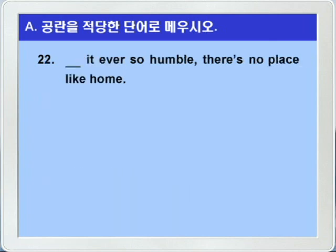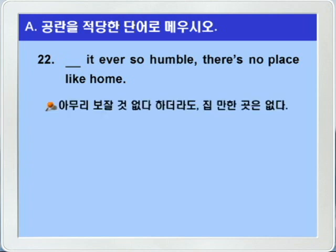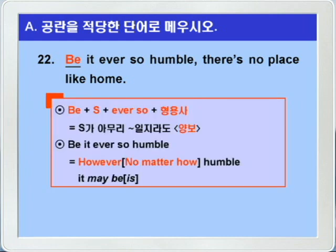22번입니다. blank, it ever so humble. there's no place like home. humble은 보잘것 없는, 비천한 이런 뜻이니까, 그것이 아무리 보잘것 없다 하더라도, 짐만한 곳은 없다. blank에는 be가 들어가면 됩니다. 가정법 현재, 즉 동사원형을 사용한 양보 구문이 되겠습니다. be, 주어, ever so, 형용사, 이런 형태가 되면, 주어가 아무리 뭐뭐 일지라도, 이런 양보의 의미가 된다고 그랬어요. be it ever so humble은 however humble it may be, 혹은 no matter how humble it may be, 이렇게 쓸 수 있는 것입니다. be it ever so humble, there's no place like home.